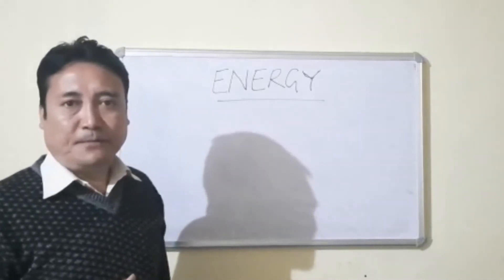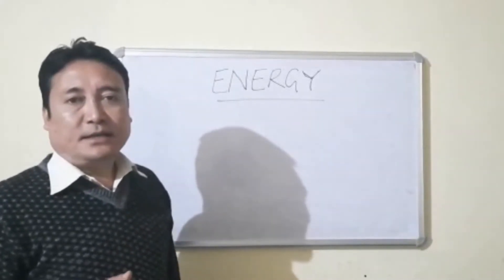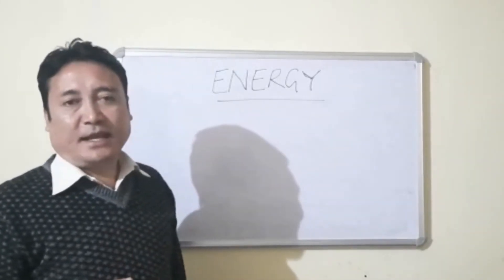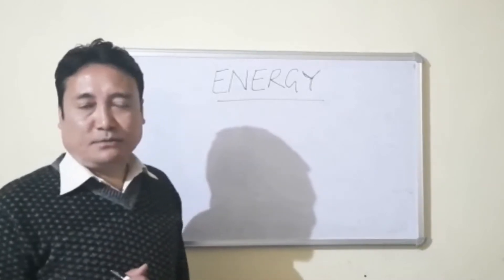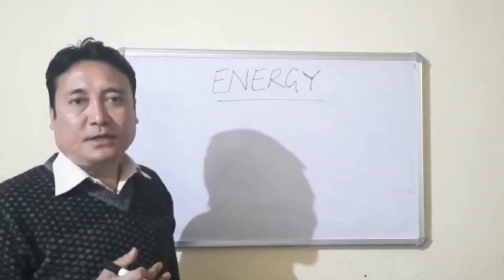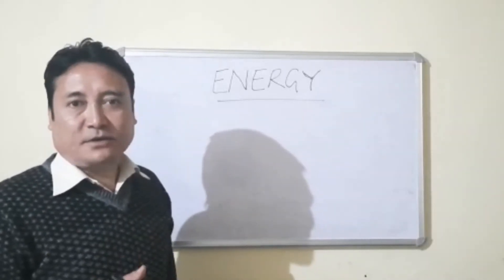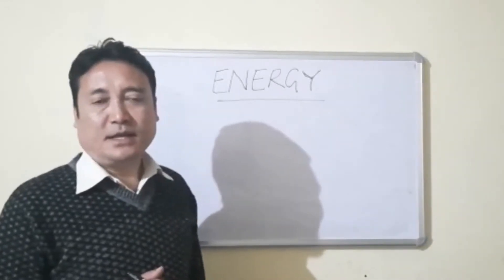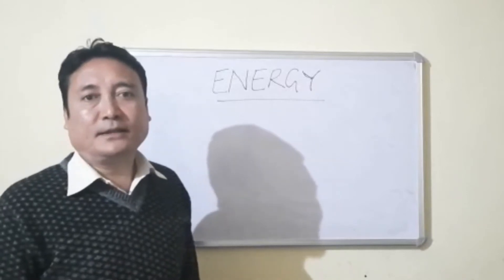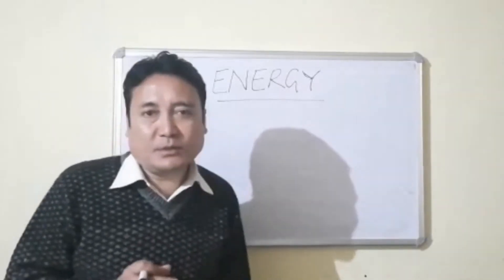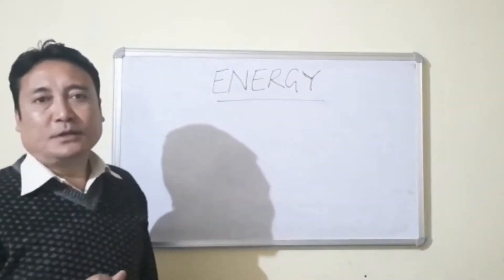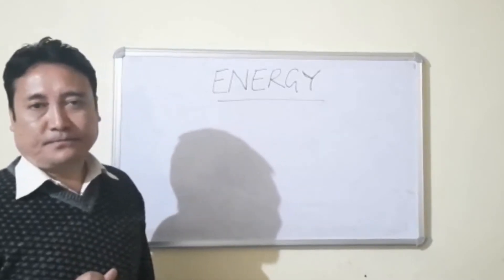Energy plays a very important role in our life. Plants get energy from the sun, which we call solar energy, and we get energy from the food we eat. The food we eat has chemical energy stored in it, and this chemical energy will be converted into mechanical energy. Energy is the capacity or the ability to do work.